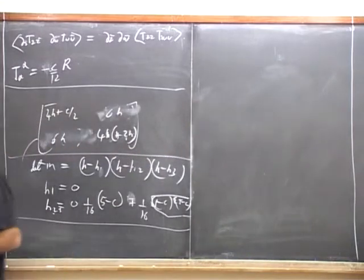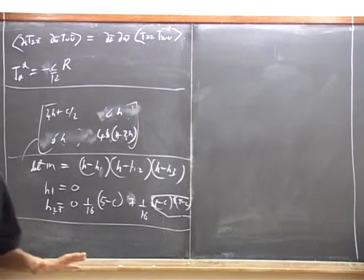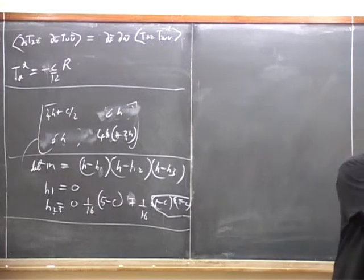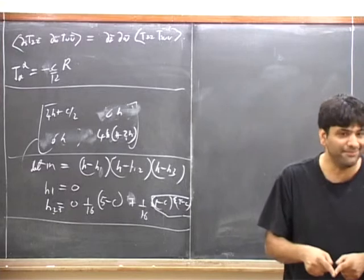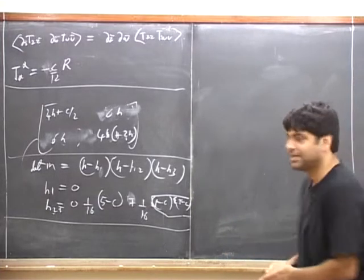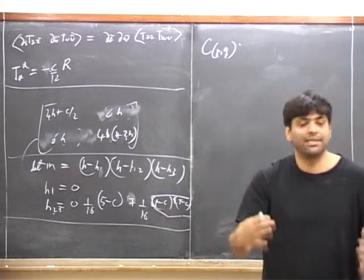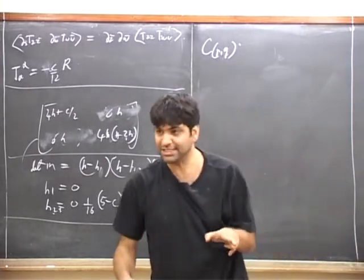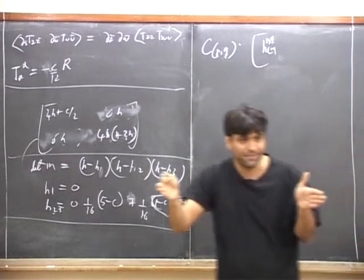It turns out that you can have unitary theories if and only if C takes one of a set of discrete values — an infinite set of discrete values. Given that particular value of C, the possible allowed values of H in that theory are some finite set of values. There's a set of two integers in terms of which all values of C less than 1 consistent with unitarity are parametrized. Given those particular integers, the range of possible H values, which runs over a finite set, is also specified.